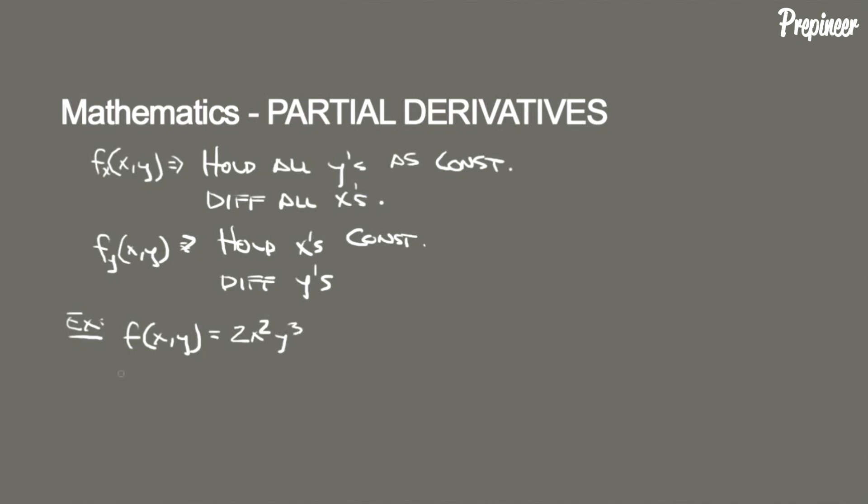Now all we need to do is hold the function y³ constant and differentiate x², and we get 4xy³. Now doing the same, finding the partial derivative with respect to y...